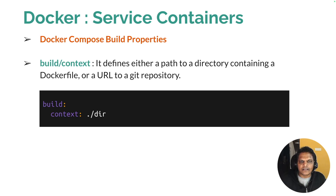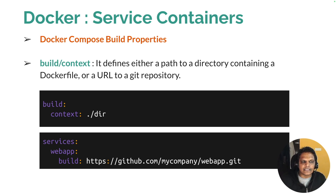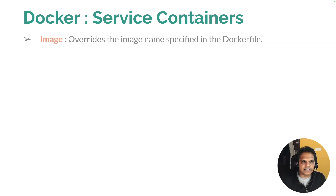The syntax will look like this: you define build, and within the build you define the context, and after the context you define the path of the directory where the Dockerfile is present. If you want to use a git location, you define services, then your service name, then the build option, and then the git location directly. This is the way to define the path of your Dockerfile — either a local directory or git location — in your docker-compose.yml.